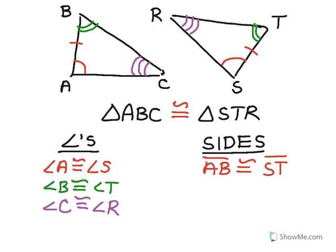Then take the BC. Take the second and the third letter in the first triangle. Side BC will be congruent to side TR in the second triangle. So BC congruent to TR.